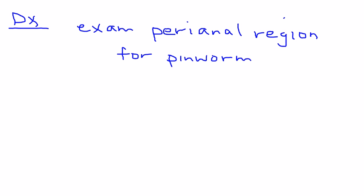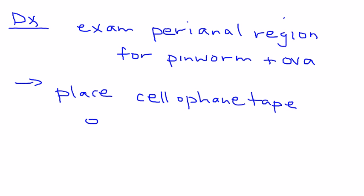How do you actually identify the pinworm and the ova? It's a very unique and special test. You actually place a piece of cellophane tape on the perianal area, and then what you do is place the tape on a glass slide.